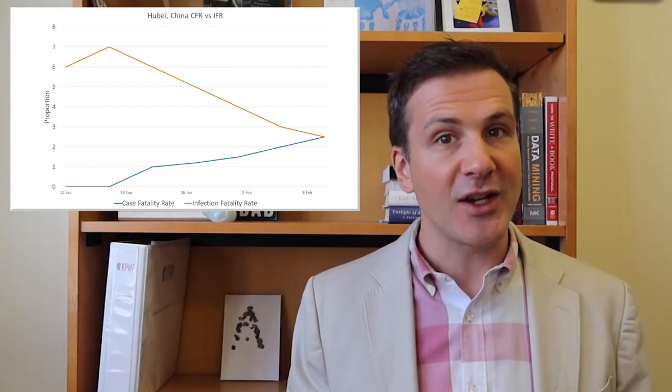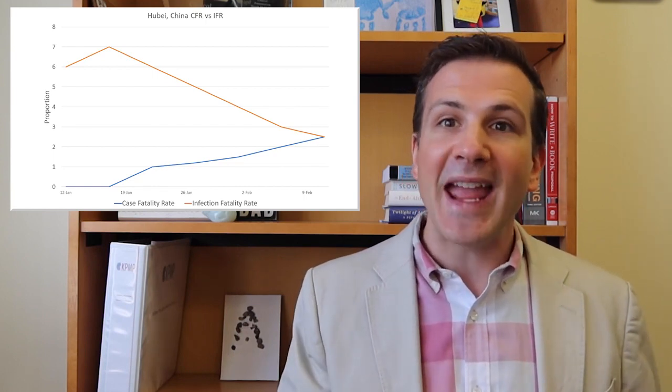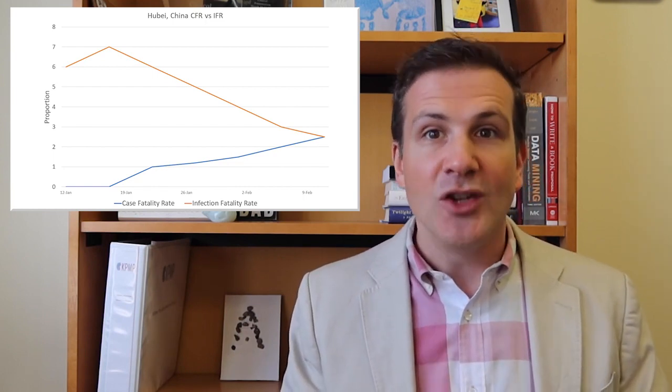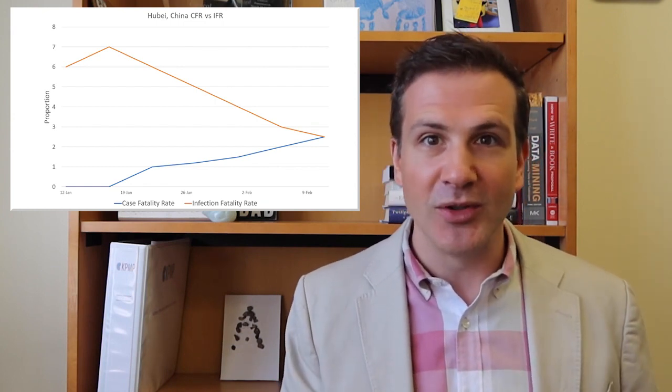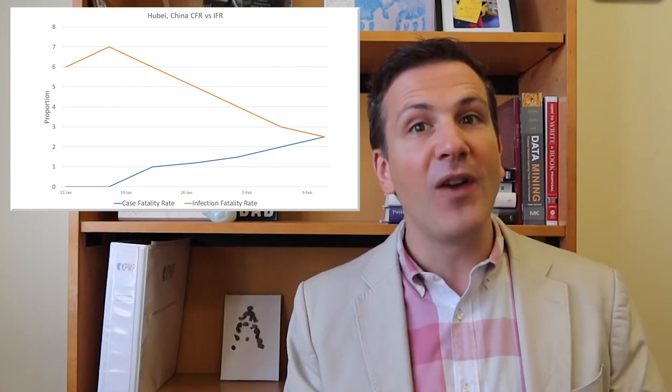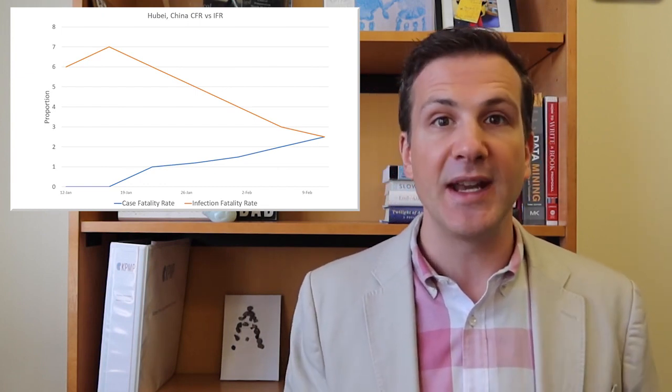Here's the temporal trend in infection fatality rate from Hubei, China for example. You can see that while the case fatality rate was rising, due to that right censoring problem, deaths were catching up with the initial explosion of the epidemic, the infection fatality rate was falling, evidence that the docs there were getting a bit better at treating COVID-19.